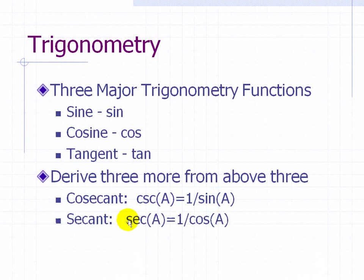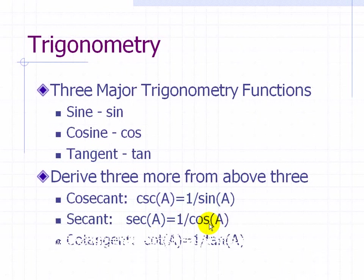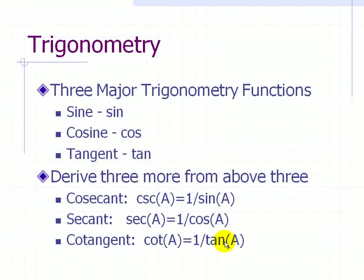The secant, or SEC, of angle A is just the reciprocal, or one over the cosine of A. And the cotangent of A, or COT, is equal to one over the tangent of A — also a reciprocal relationship.